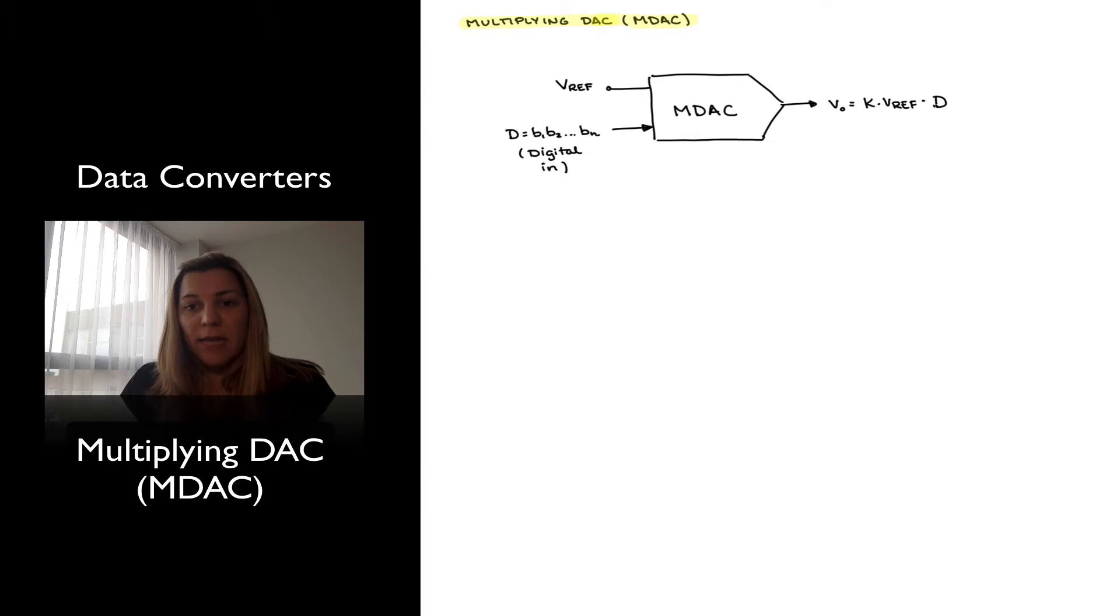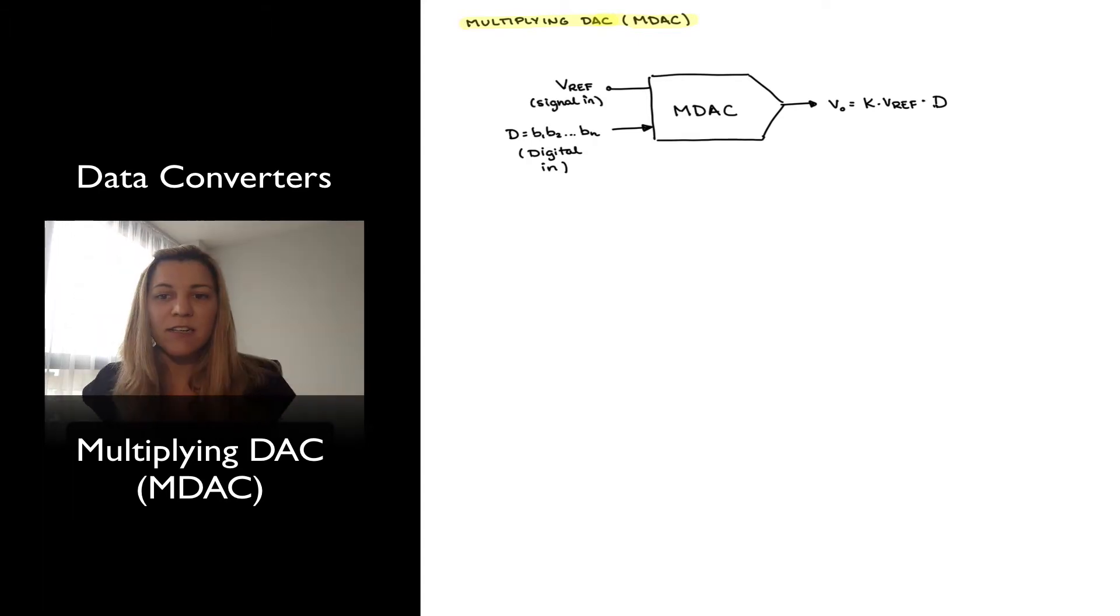In the case of the MDAC, the reference voltage is also an input signal, and it can vary. And the idea is that the output voltage is going to be proportional to the product of that reference input signal and my digital input. And so again, the main particularity is that the reference is also a signal, it can vary.